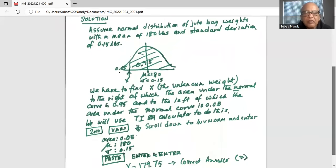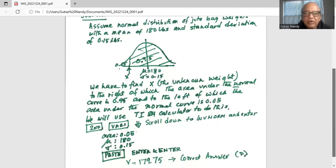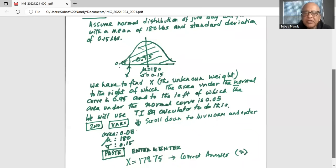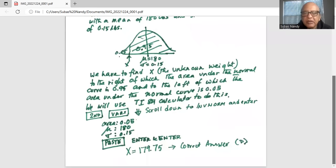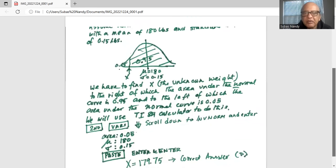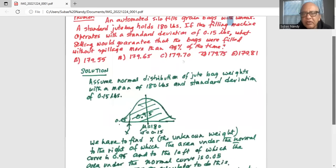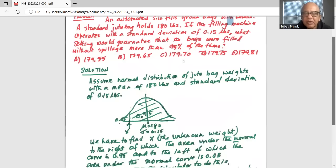Area is 0.05, mu is 180 population mean, population standard deviation sigma is 0.15, and then we scroll down to PEST, bring the cursor on PEST and hit enter and enter twice and x comes out as 179.75. So the correct answer is option D which is 179.75.